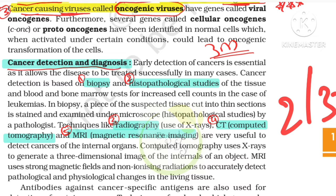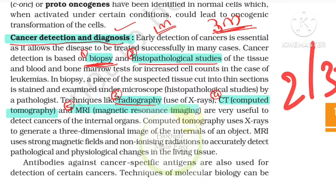Cancer detection and diagnosis: how can you detect cancer cells? There are some methods. For 3-mark questions, the detection methods include biopsy, histopathological studies, and techniques like radiography, CT (Computed Tomography), and MRI (Magnetic Resonance Imaging).